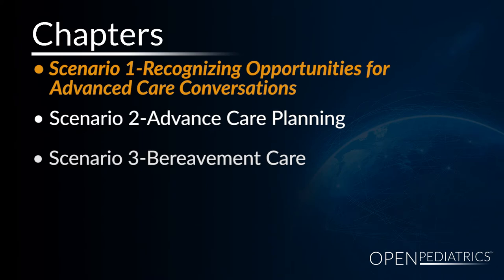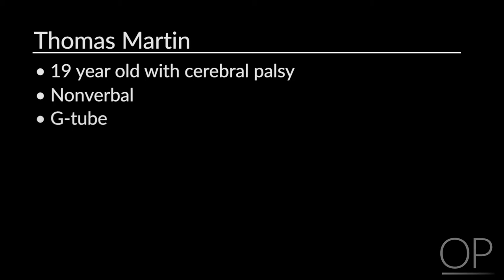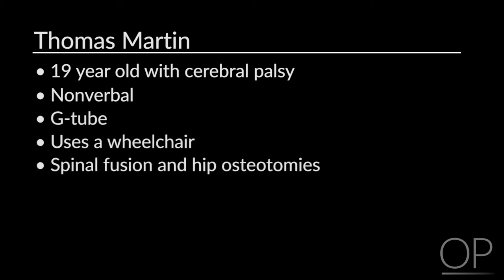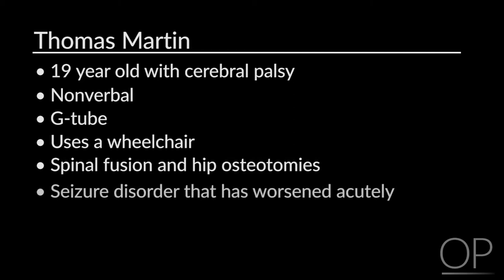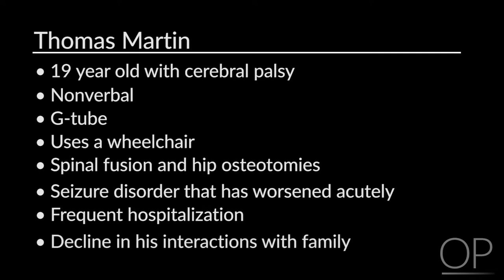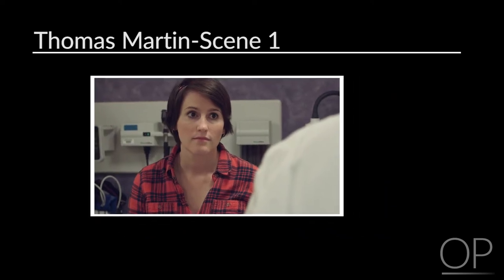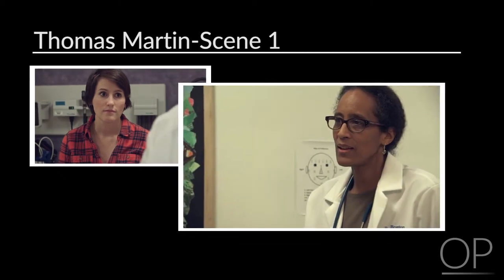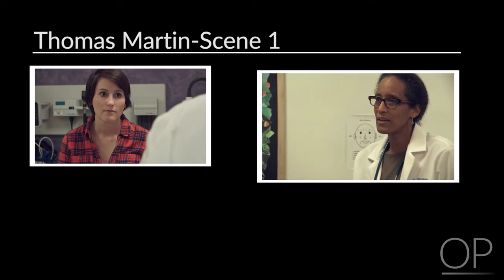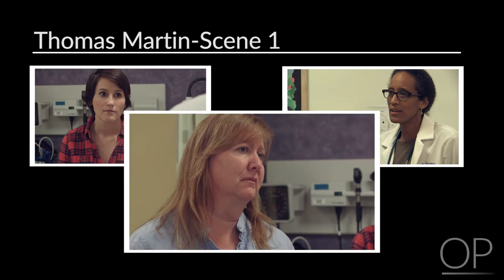Scenario 1: Recognizing Opportunities for Advanced Care Conversations. Thomas Martin is a 19-year-old young man with cerebral palsy who communicates non-verbally. He is fed by a G-tube, uses a wheelchair, and has undergone a spinal fusion and hip osteotomies. He has a seizure disorder that has been stable for many years, but has worsened acutely in the past months, requiring frequent hospitalization and causing a sharp decline in his interactions with family and his ability to function. In the first scene, we meet Thomas's sister Natalie, who is finishing a scheduled well visit with her primary care physician, Dr. Harris, who uses this routine interaction to inquire about Thomas and invite his parents to a discussion of long-term goals of care.